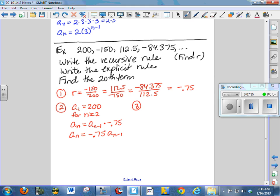Explicit rule is what I just wrote before. A sub n is equal to a sub 1, which is 200 times negative 0.75 to the n minus 1. That's the exponential function.